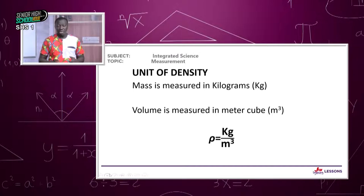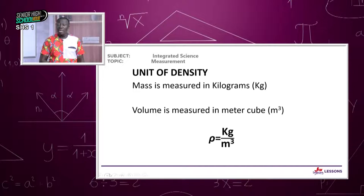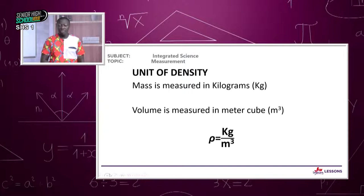Now that we've determined what density is, we also have to look at the unit. The SI unit for mass is kilograms, represented by kg. Any mass measurement must be converted to kilograms. Volume is measured in meter cubed — meter times meter times meter. So density, which is mass over volume, will have the unit of kilograms divided by meter cubed.